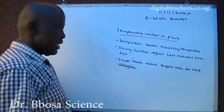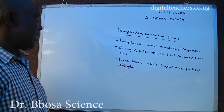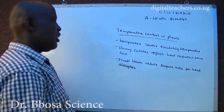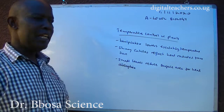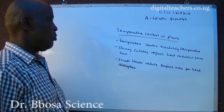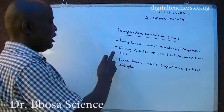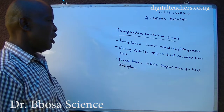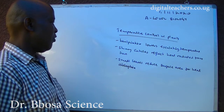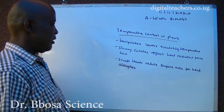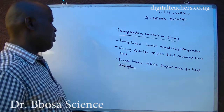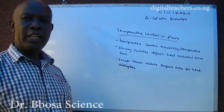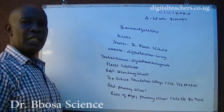Temperature control in plants: transpiration lowers excessively high temperature; shiny cuticles reflect heat radiated from the sun; small leaves reduce surface area for heat absorption.